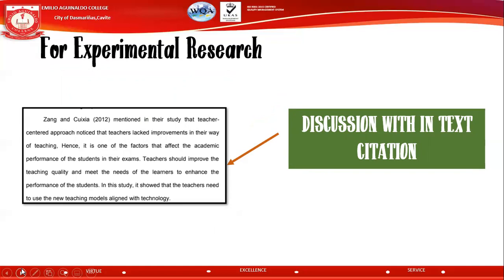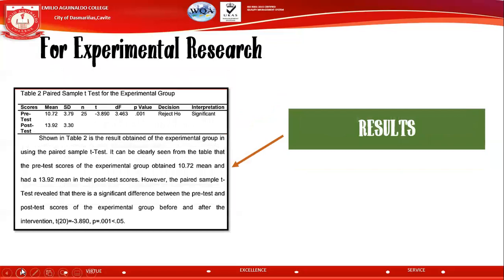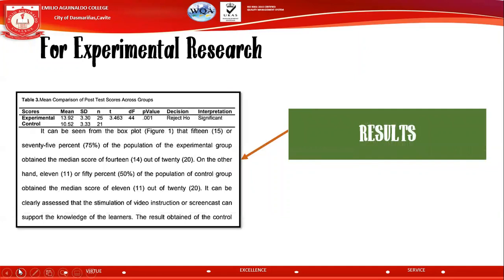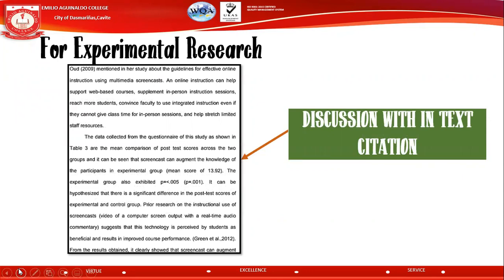For the second problem — whether there is a significant difference — provide a paired sample t-test table (again using open table APA format). For example, a p-value of 0.01 means there is a significant difference. Follow the APA format for reporting p-values. For cross-group comparison, compare the experimental and control groups, and always include discussion with in-text citation.